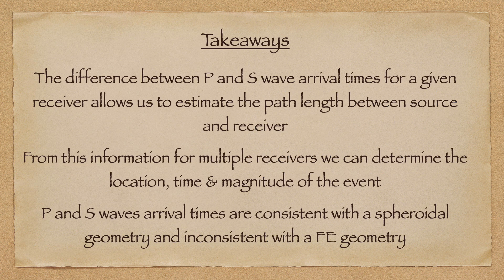So that's about all I have for today. The takeaway message that I want to impart is that the difference between P wave and S wave arrivals gives us an estimate of the path length that the waves have travelled along to get from the seismic source to the seismic receiver. There is simply no mechanism by which these observations can be reconciled with a flat-Earth geometry. The physics of it just don't pan out. On the other hand, the observational data fit extremely well to a spheroidal geometry, with no exotic physics needing to be invoked.